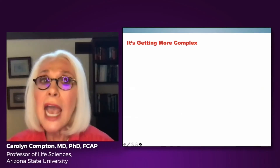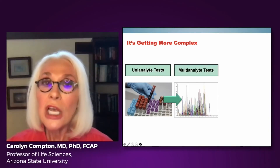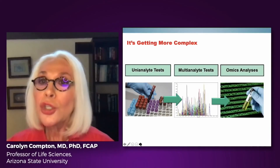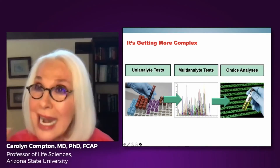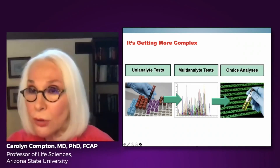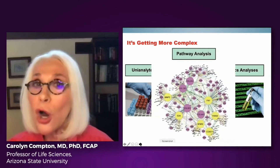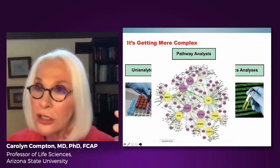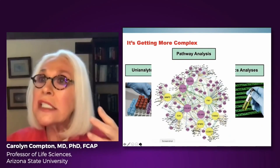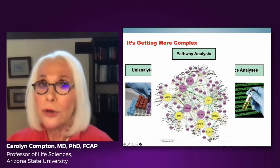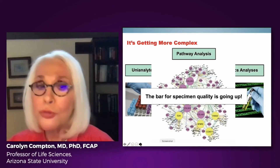This problem is getting ever more complex as we move in pathology from uni-analyte tests to multi-analyte tests to omics analyses — where we now have the ability to look at every member of a species of biomolecules in the same specimen. It's going even further beyond omics to pathway analysis, examining the interactions between classes of biomolecules and how they signal cell behavior. The bar for biospecimen quality is therefore going through the roof.